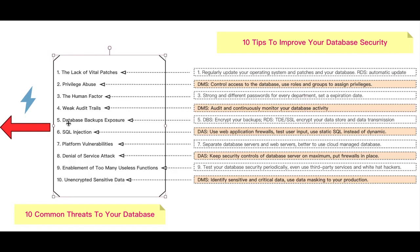Next: database backup exposure. Backup is very important to your critical database, but database backup exposure will be a disaster. To prevent this, we recommend: use DBS (Data Backup Service) on Alibaba Cloud to encrypt your backups, and use RDS to encrypt your data store via TDE (Transparent Data Encryption) and data transmission via SSL.